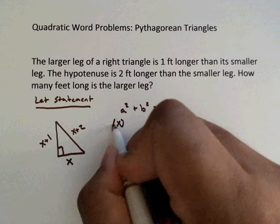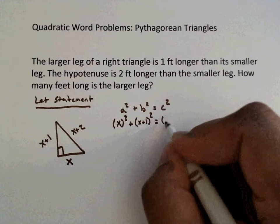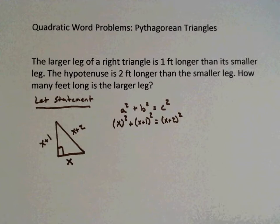Where C has to be your hypotenuse. So for my A, I'm going to have that be my small leg, X squared. For B, my large leg, X plus 1 squared. And for C will be my hypotenuse, which is X plus 2 squared. And then we just solve the problem.